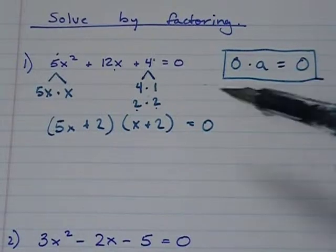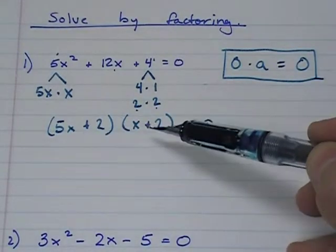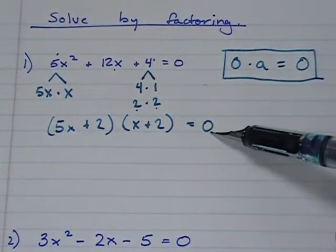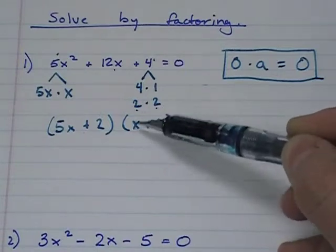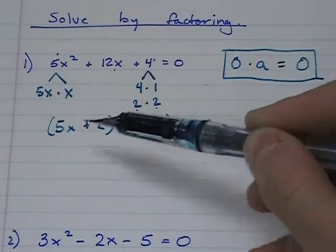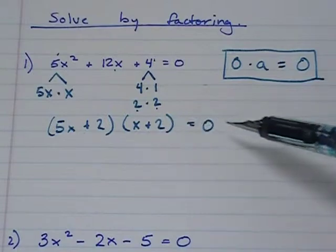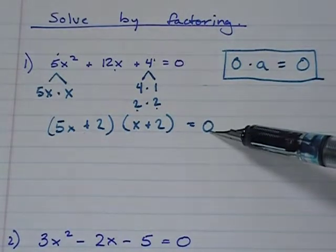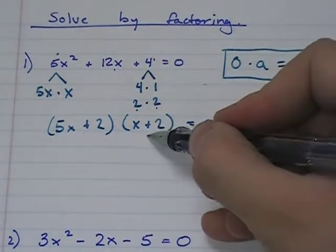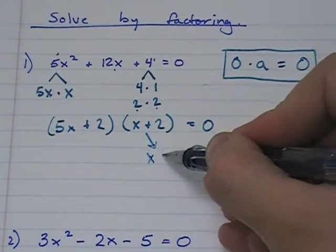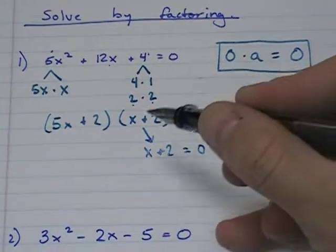Now, what we're looking for is what number will make this statement true. Well, any number that makes this zero, anything times zero will equal zero. So what we do is we set each statement equal to zero.